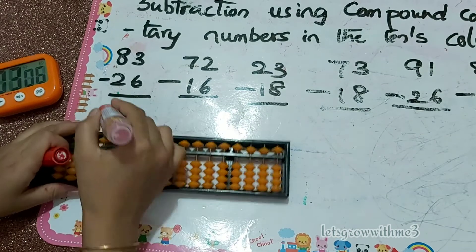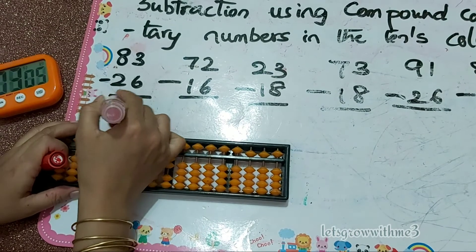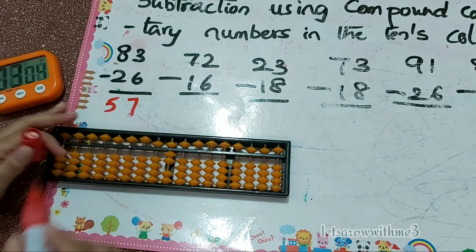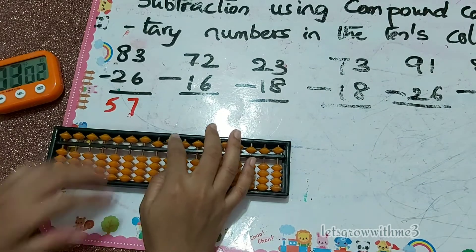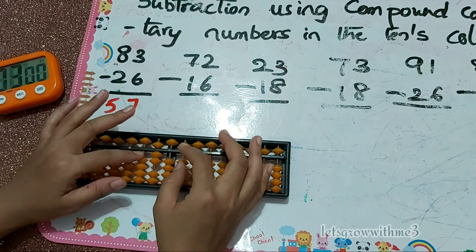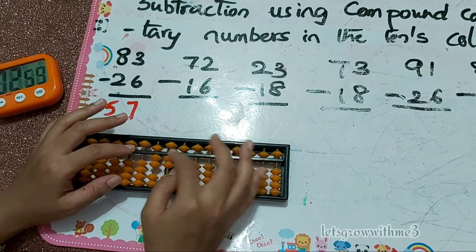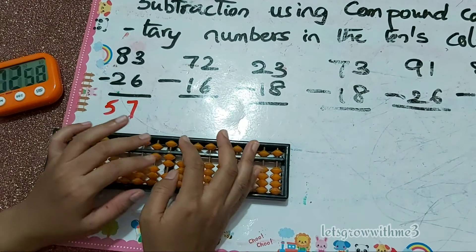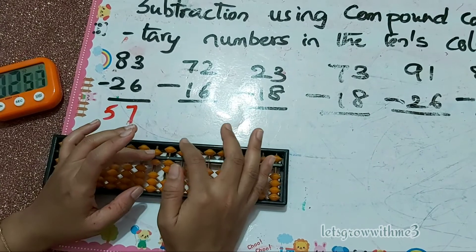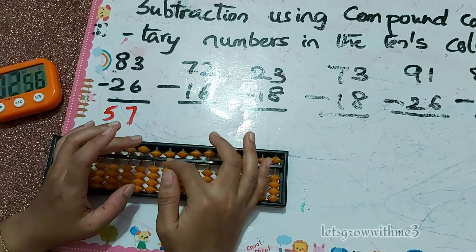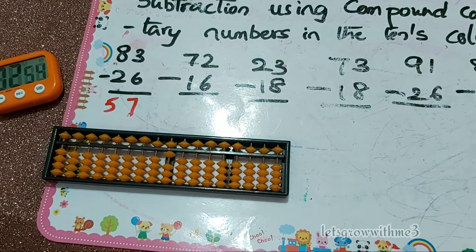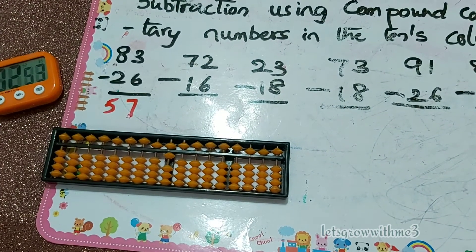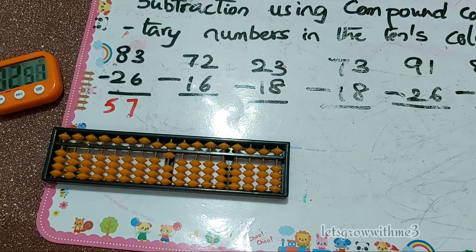Next: 72 minus 16. So minus 1 in the tens column, minus 6 in the ones column. Papa down, mama down, baby down. So the answer is 56.